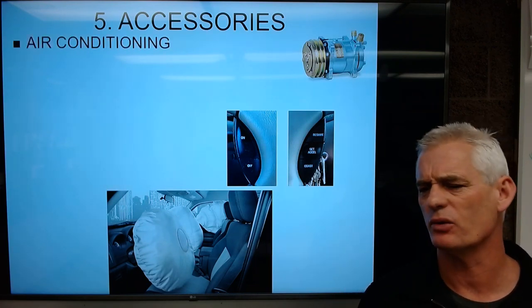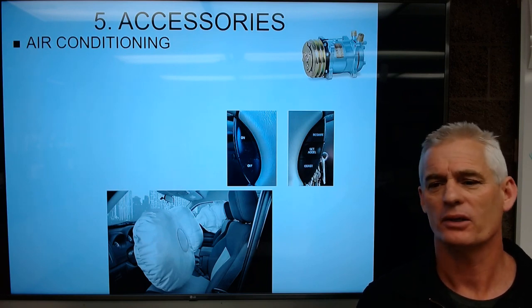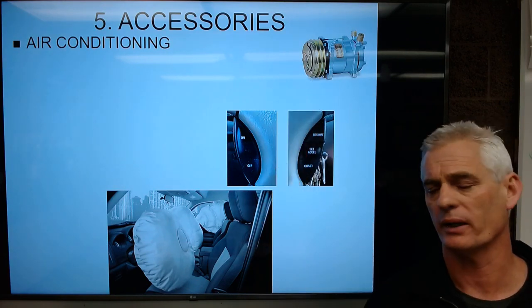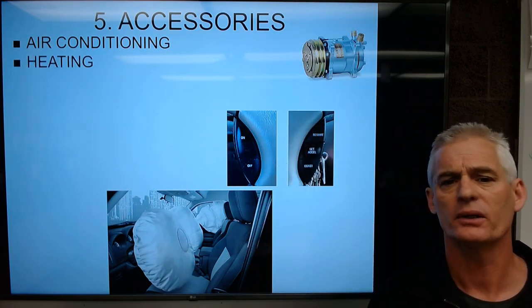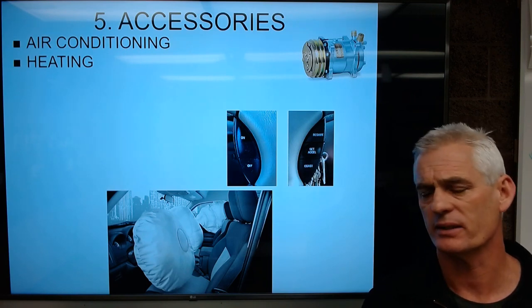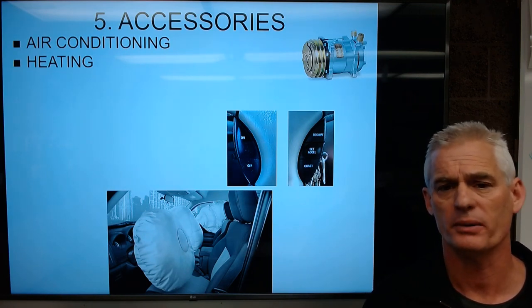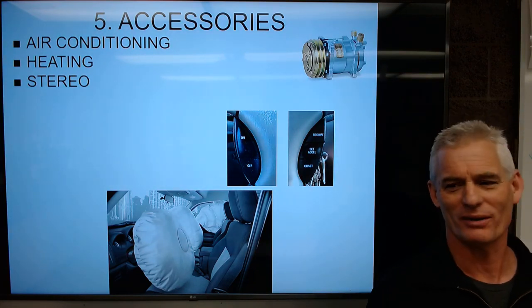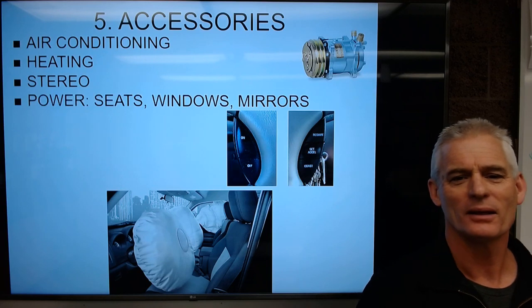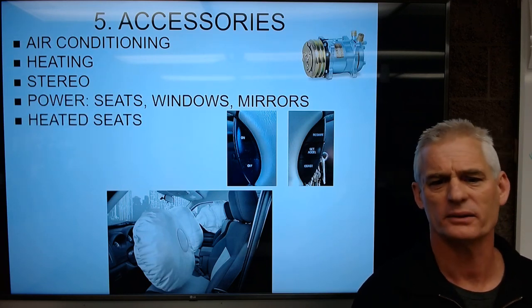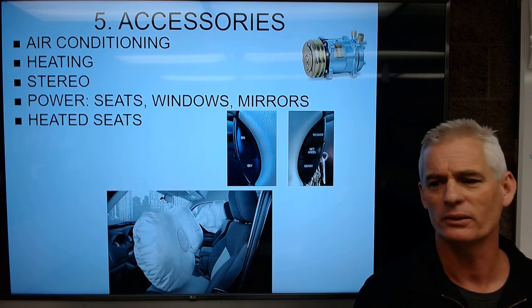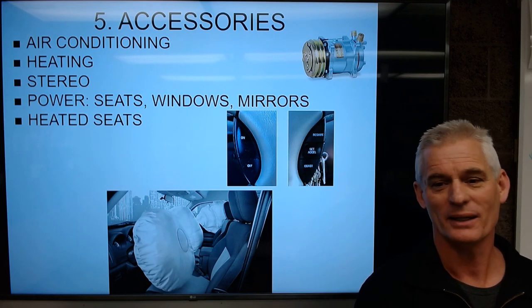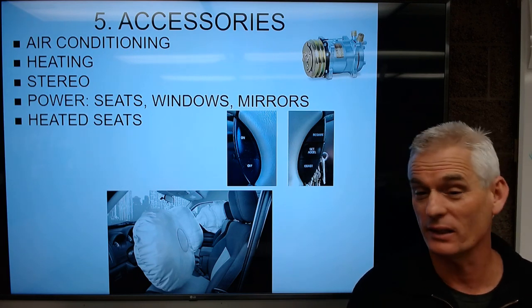Accessories are devices on cars to make life nicer — you don't have to have them. Air conditioning: the compressor makes cold air, which is really nice when it's hot. Heat is considered an accessory — we use the engine's heat to warm the passenger compartment. We have a stereo, which you can't actually drive without but is technically not critical. Power seats, power windows, power mirrors, power door locks, and heated seats — think Subaru, Mercedes, new Chevy trucks. Heated and cooled cup holders, and even heated and cooled steering wheels.